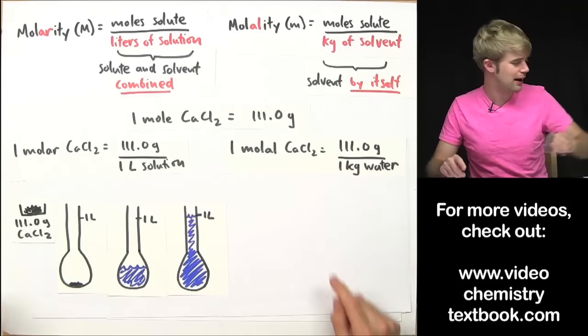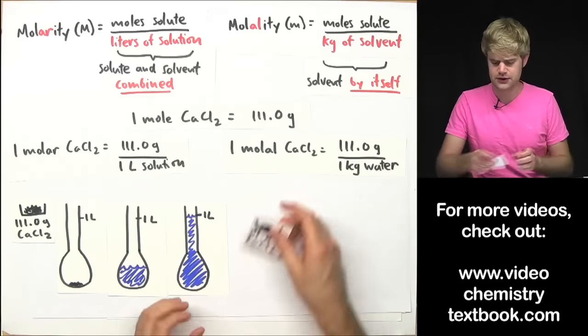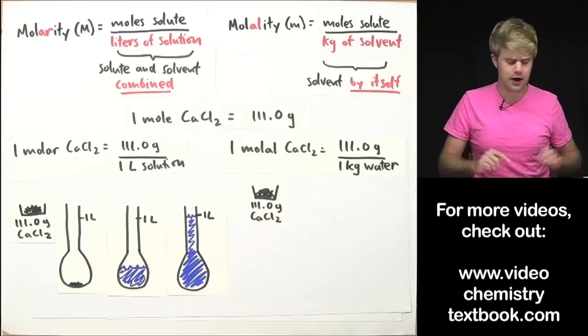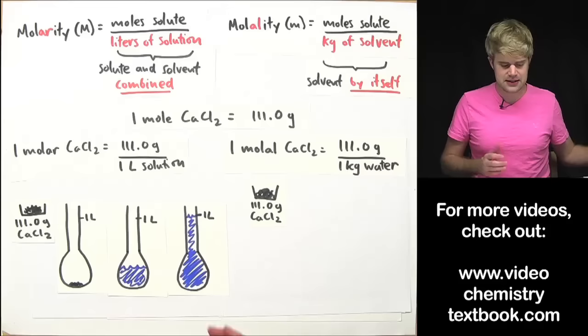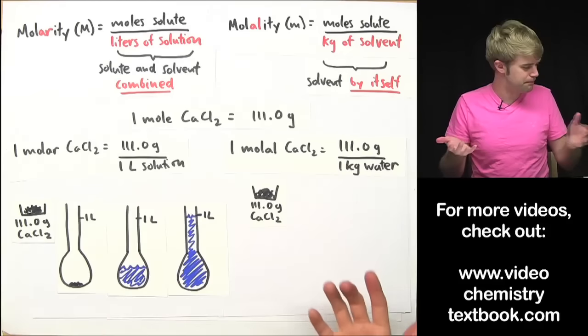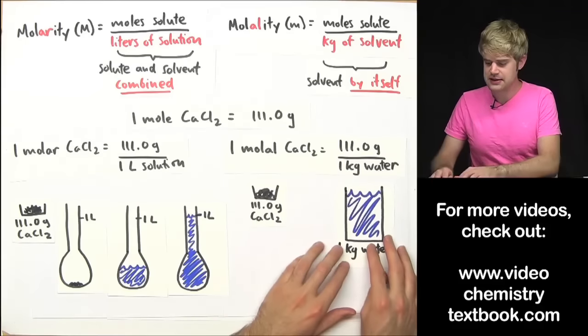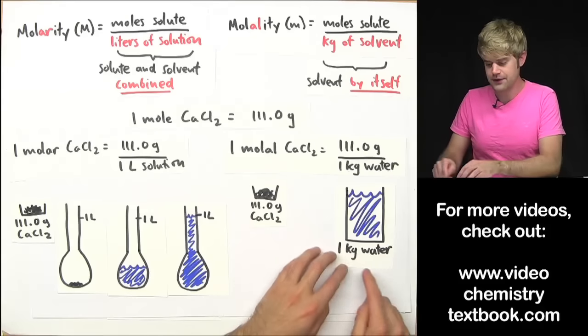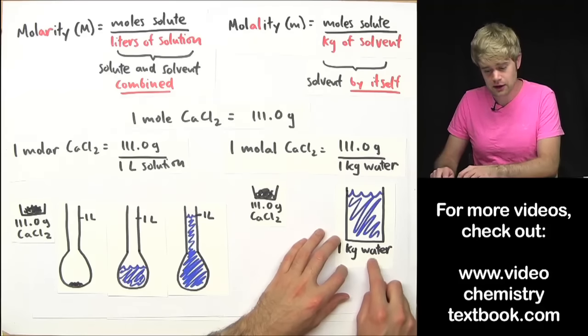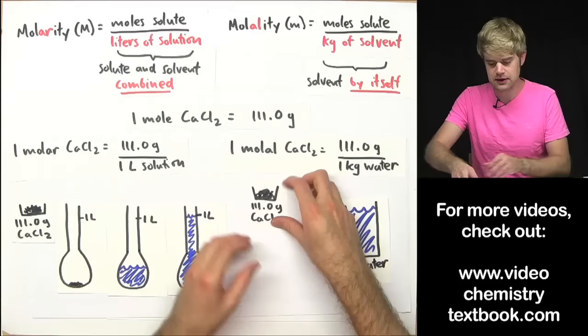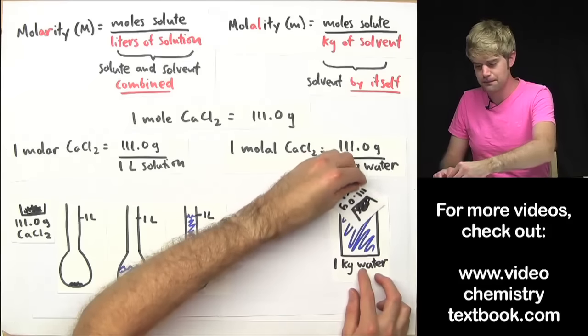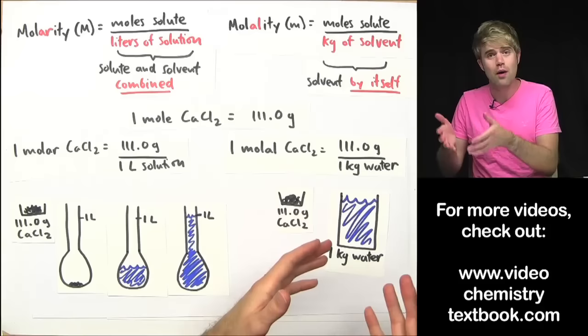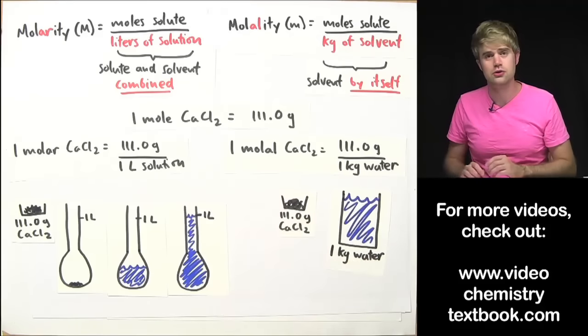Now this is different with molal. In that case, I'll still go to the scale and weigh out 111 grams but then instead of using a flask or a beaker or anything, I'll just take a container and I'll put that on the scale and I'll weigh out one kilogram of water and then I'll just take the calcium chloride and I'll dump it in the water and I'll mix it together and there's my one molal solution.